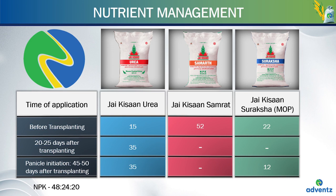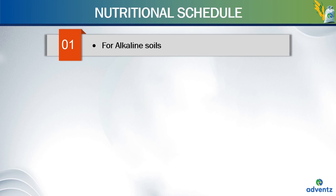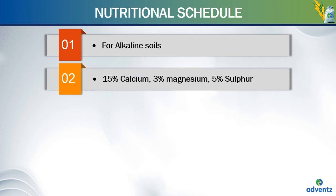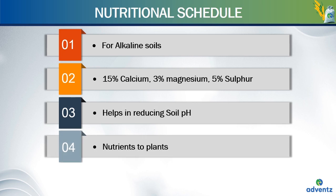Let's look at the nutritional schedule in detail. The first nutritional product is called Mangala Setrite. Mangala Setrite is used for alkaline soils. It is an outstanding formulated soil amendment that reclaims alkaline soils more efficiently than any other soil amendment. It contains calcium at 15%, magnesium at 3% and sulfur at 5%. The benefits of Mangala Setrite are that it reduces the pH of alkaline soils, helps in making nutrients readily available to plants, alleviates nutritional toxicities and improves physical health of the soil.